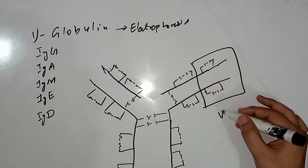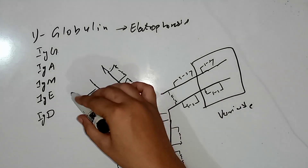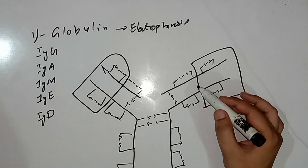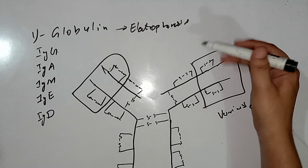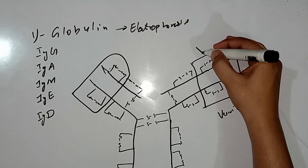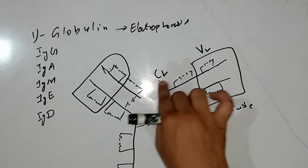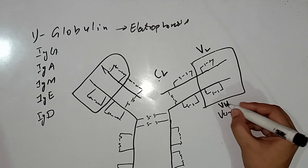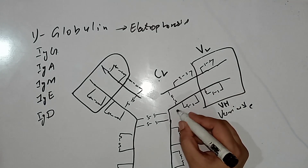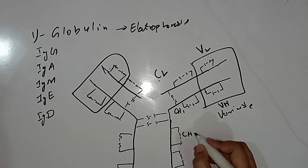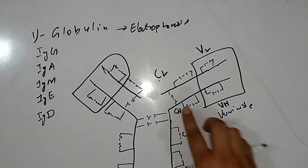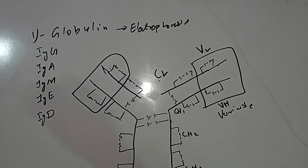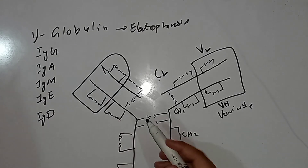The variable portion of immunoglobulin is at the top and it binds antigens; the rest is constant. The light chain is classified into two segments: VL (variable light chain) and CL (constant light chain). The heavy chain has VH (variable heavy), then constant regions CH1, CH2, and CH3, coded by different genes.